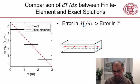And it turns out that the error in the derivative is greater than the error in the temperature itself. To see that, if I say I want to look at the error at a location like that, the finite element solution says that the dT/dx is that value here,